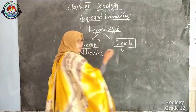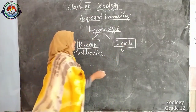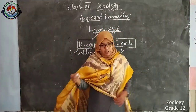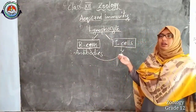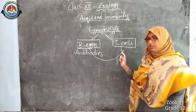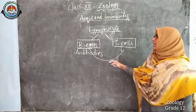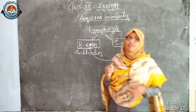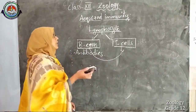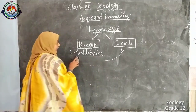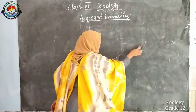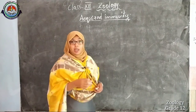T cells cannot produce any type of antibody, but instead they help B cells for the production of antibodies. T cells are also responsible for the killing of tumor cells. This is depicted in your textbook. Antibodies are more or less protein in nature and produced by B cells.